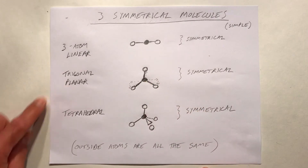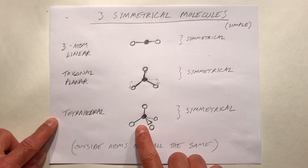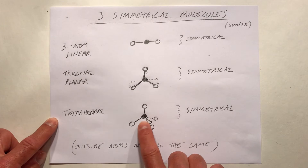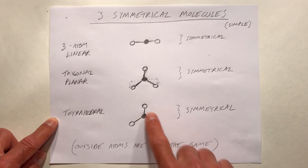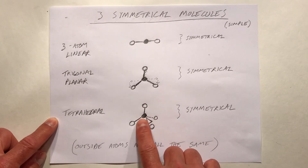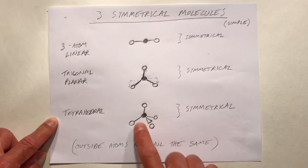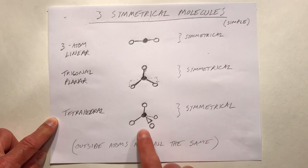That can happen in three dimensions as well. If we have a central atom bonded to four identical atoms along that kind of structure, that involves one, two, three, four, five different atoms total.